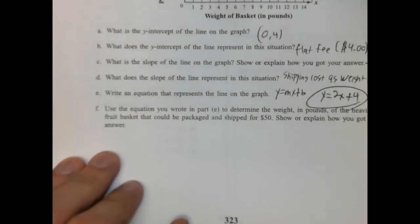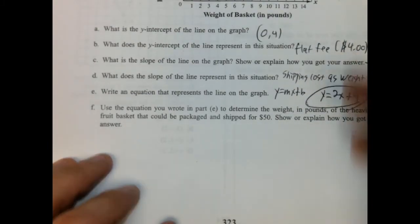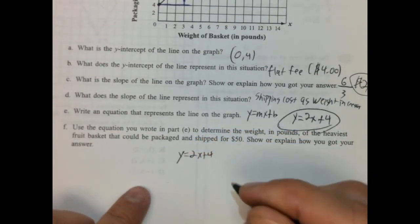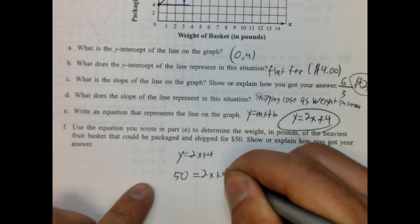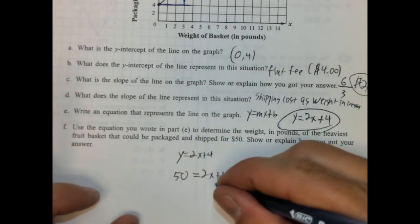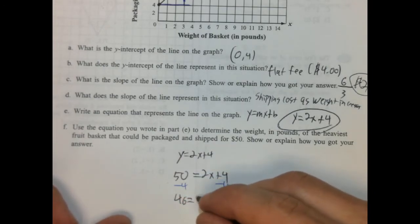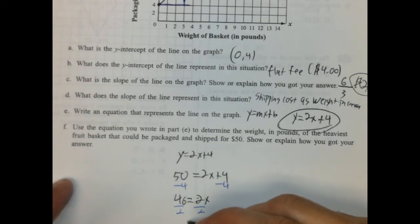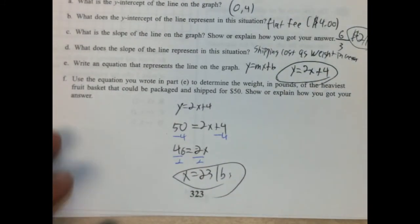Use the equation you wrote in Part E to determine the weight in pounds of the heaviest fruit basket that could be packaged and shipped for 50 bucks. Alright, so the cost is $50. So Y equals 2X plus 4. So cost is Y, so $50. So we're going to solve for X here. We can do that. Subtract 4, get rid of our constant. So $46 equals 2X. Divided by 2, that's our coefficient. So it would be 23 pounds. And that's the heaviest object you could ship for 50 bucks.